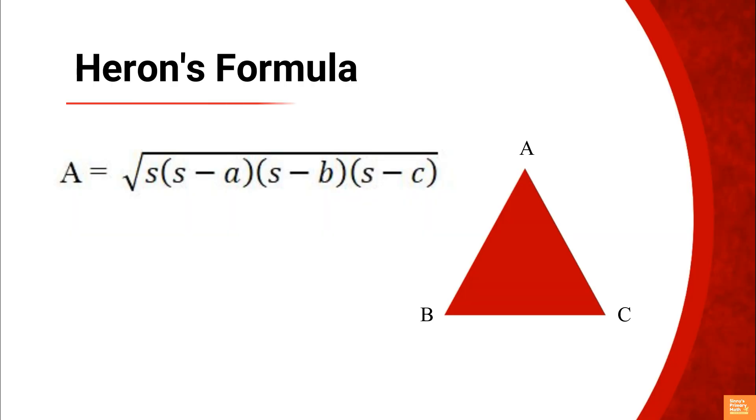If the height of a triangle is not known, the formula half BH cannot be applied to find the area. Then, Heron's formula is used to calculate the area of a triangle if all the side lengths are known. A equals square root of S into S minus A into S minus B into S minus C.